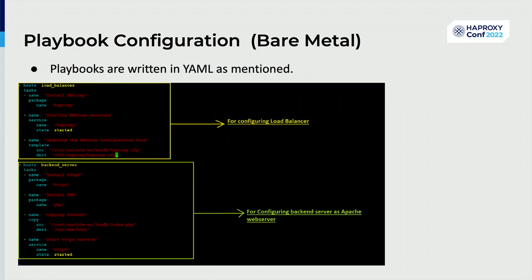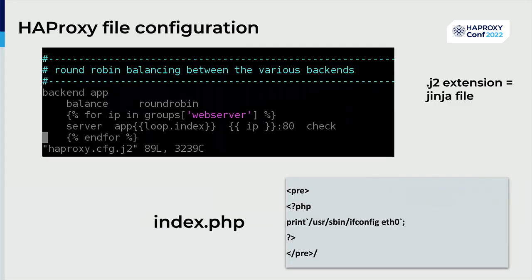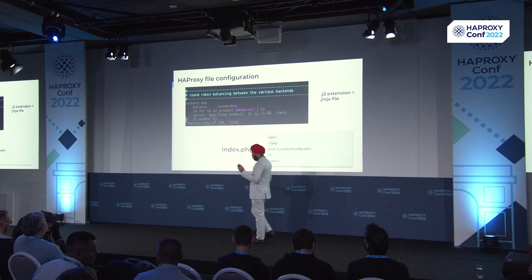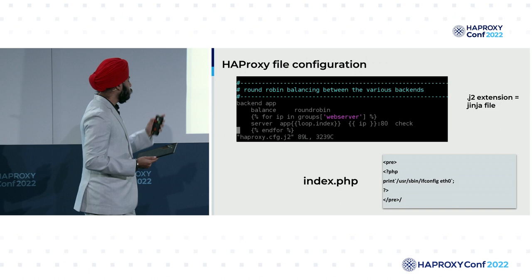Here's the main part of focus: the HAProxy configuration. All we need is four lines of code. It's written in Jinja template, used by Ansible. This concept is called templates in Ansible — using this we can automate the whole process. It will have the J2 extension.